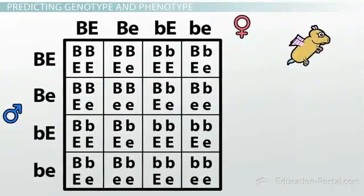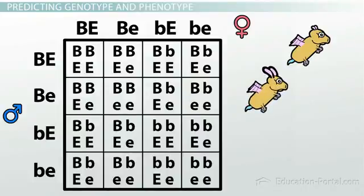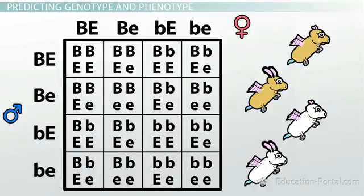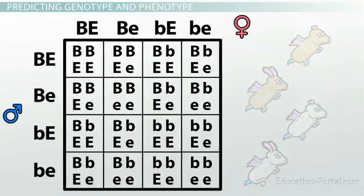We're going to get brown hamsters with little ears, brown hamsters with big ears, white hamsters with little ears, and white hamsters with big ears. The Punnett square also allows us to predict the ratio at which these different phenotypes will occur.